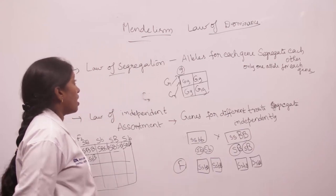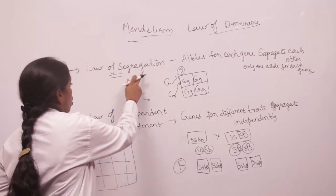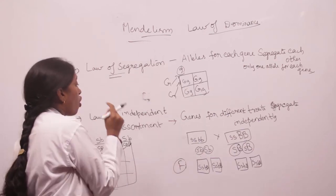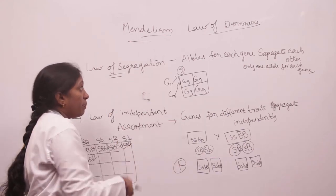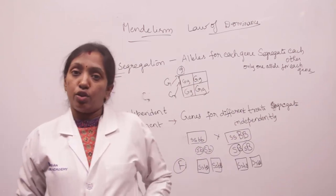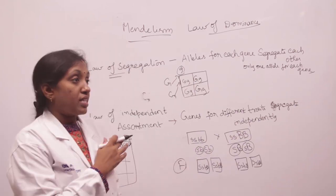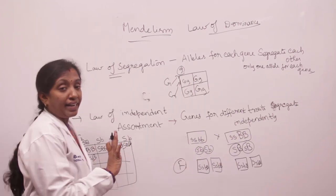Mendel proposed three laws: the law of segregation, the law of independent assortment, and the law of dominance. That's about Mendelism.